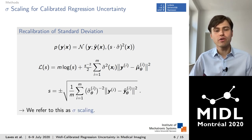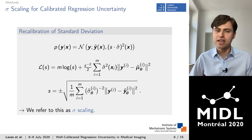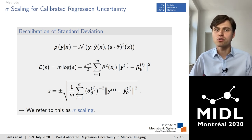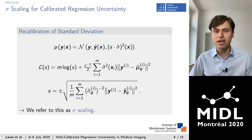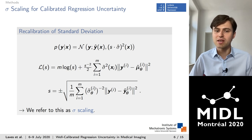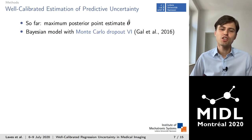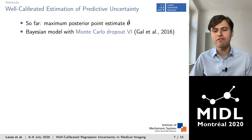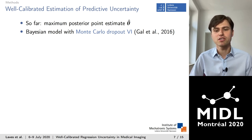We can use gradient descent for this; however, in the case of a single scalar, the solution to this loss function can also be written in closed form. We refer to this as sigma scaling and use it to calibrate both uncertainties in the next step.